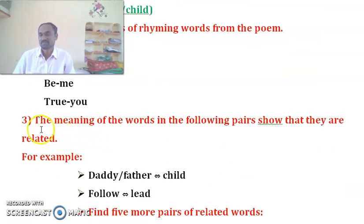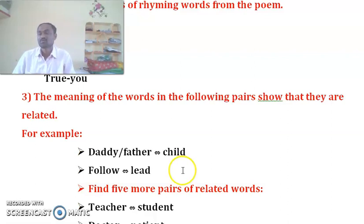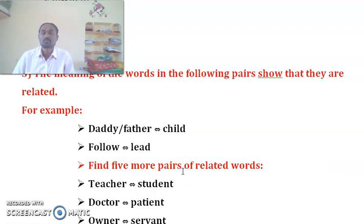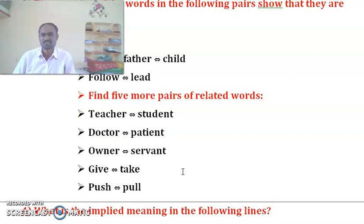Question number 3: The meaning of the words in the following pairs show that they are related. We have to find out five more pairs of related words. The words given are: teacher/student, doctor/patient, owner/servant, give/take, push/pull, come/go. You can write as many pairs as you know.